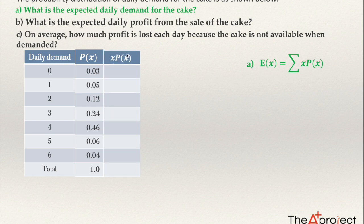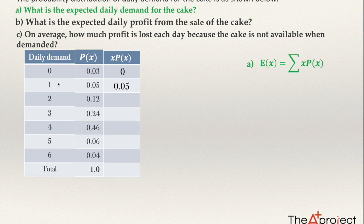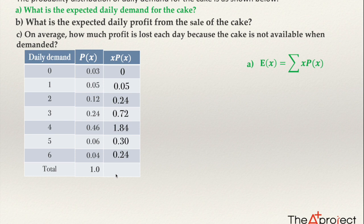We can do this in a table. If we have Excel, we can make another column and in this column compute the product of each X value multiplied by its probability. If working by hand, multiply each X by its probability: 1 times 0.05 = 0.05, 2 times 0.12 = 0.24, 3 times 0.24 = 0.72, 4 times 0.46 = 1.84, et cetera. Add together all these products, and I find that the answer for question A is 3.39.